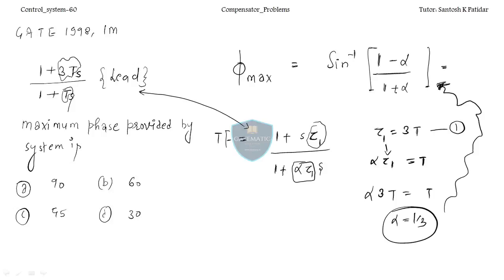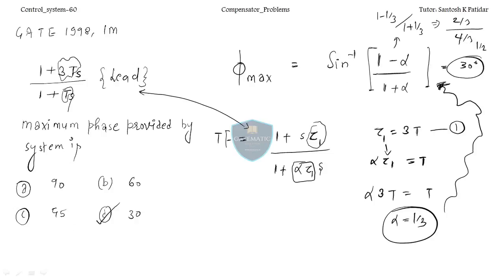Substituting alpha = 1/3 into the formula: sine inverse of (1 minus 1/3)/(1 plus 1/3) = sine inverse of (2/3)/(4/3) = sine inverse of 1/2 = 30 degrees. So 30 degrees is the answer. That's all for this class. We'll meet in the next class on controllers. Take care and bye.